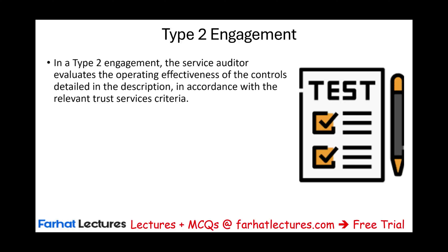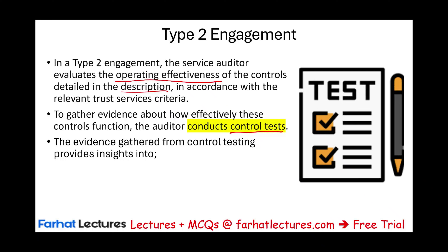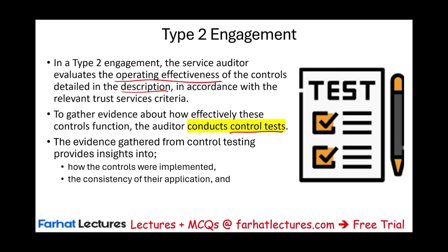In a Type 2 engagement, the service auditor evaluates the operating effectiveness of the controls described, according to the relevant trust services criteria. To gather evidence about how effective these controls function, the auditor conducts control tests. The evidence gathered from testing provides insight into how the controls are implemented, the consistency of their application, who applied them, how they were executed, and whether the people working these controls are competent, well-trained, and understand what they are doing.